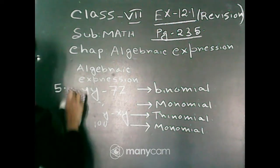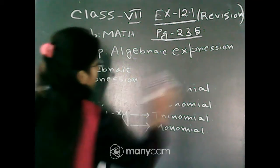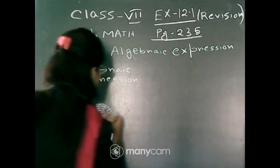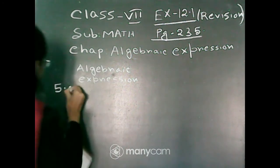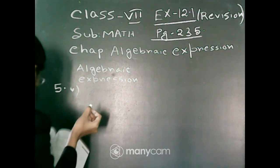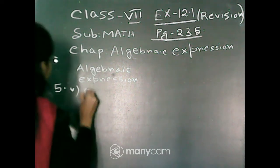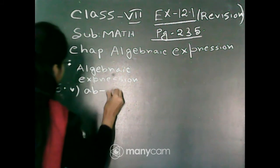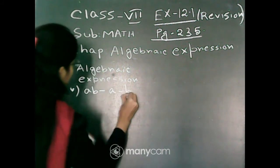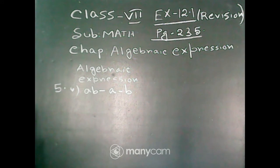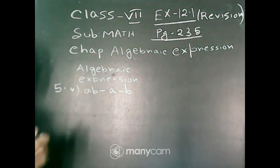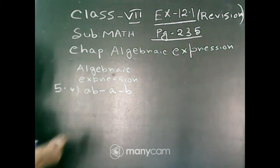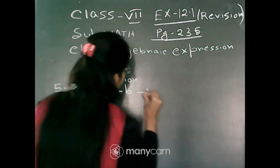Next, question number 5. Here the given algebraic expression is ab minus a minus b. This algebraic expression contains 3 terms: ab, minus a, and minus b, and the variables are a and b. So it is a trinomial.